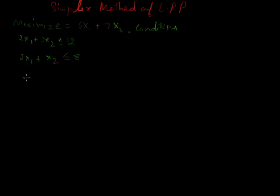Maximize means z. We write it as z equals 6x1 plus 7x2 plus 0s1 plus 0s2.